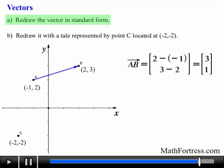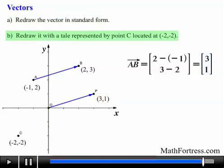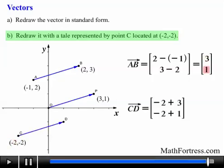So now that we have the components, we redraw the vector in standard form. We start from the origin. This represents the tail of the vector in standard form and move 3 units to the right and 1 unit up. We were also asked to redraw the vector with the tail located at point C with coordinates (-2, -2). So we first plot point C and then use the components of the vector to generate the new point D which represents the head of the vector. So we start from -2 and move 3 units to the right then move 1 unit up. So our new point is (1, -1).